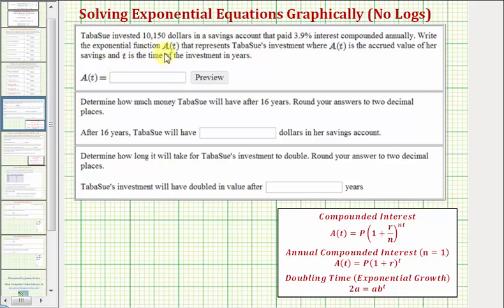Tavasu invested $10,150 in a savings account that paid 3.9% interest compounded annually. We want to write the exponential function A(T) that represents Tavasu's investment where A(T) is the accrued value of savings and T is the time of the investment in years.